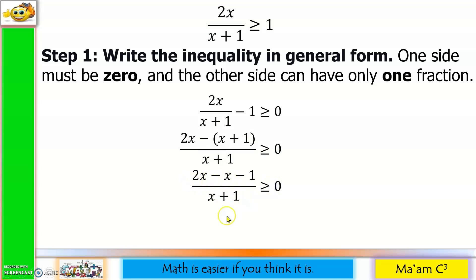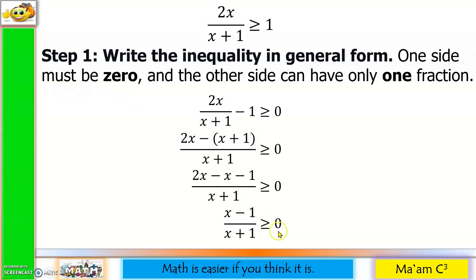2x minus x is x, minus 1, all over x plus 1, greater than or equal to 0. Checking: one side is 0 — check. The other side has only one fraction — check.